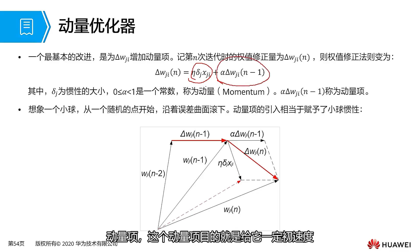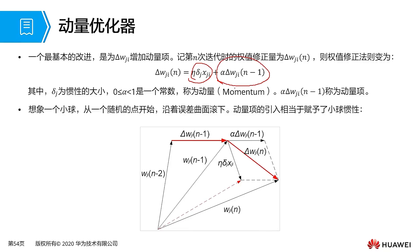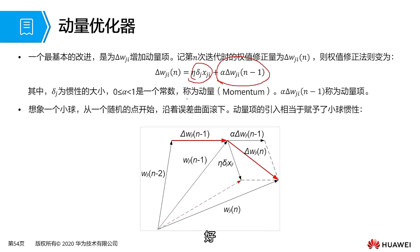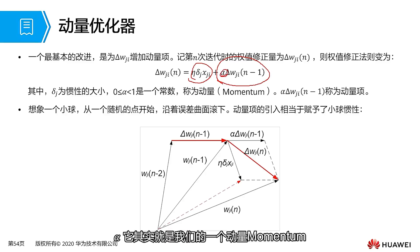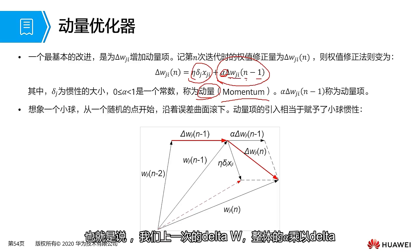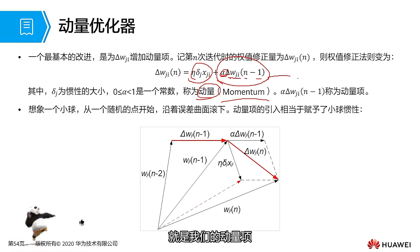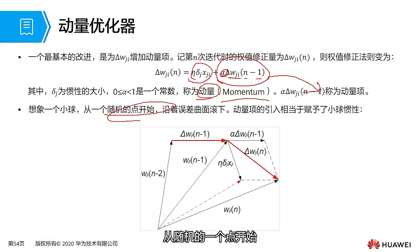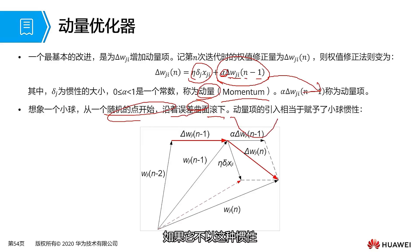Let's take a look at this expression. Alpha is actually our momentum term, and this piece is gradient descent N-1. In other words, our last delta WG, the overall alpha, multiplied by delta W at N-1. It's our momentum term. We can imagine a small ball starting from a random point, slowly rolling down along the error surface. After rolling down, if it does not have inertia, the speed at which it rolled down is slow. But if we add inertia, it quickly finds a minimum value of the error function. This is our inertia magnitude and direction.